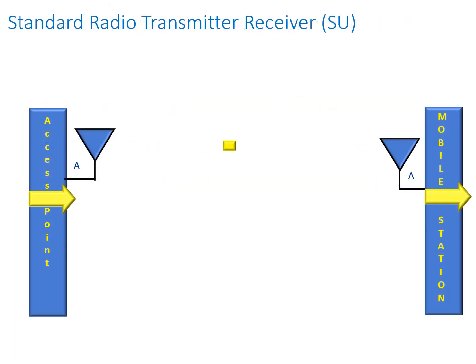Let's take a look at a standard radio transmitter or single-user system. On the left we've got the access point, on the right a mobile station — each system a single transceiver, single radio, single receiver. As you can see, the access point is streaming data from left to right with one spatial stream.